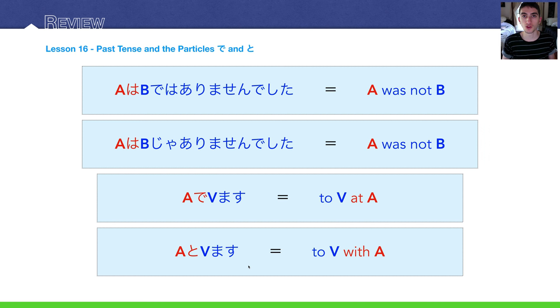And if you want to indicate that you did an action with someone, you say that someone's name, and then to. To means with in this case, and then the verb - to verb with A.